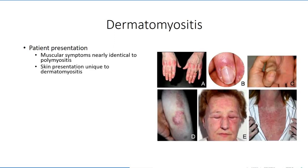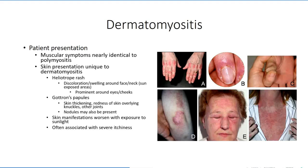What distinguishes the two diseases is the skin presentation that is unique to dermatomyositis. The pathogenesis of the cutaneous component is poorly understood, but is thought to be similar to that of muscle inflammation. The most common cutaneous issue involves a heliotrope rash, a term describing the purplish hue that the rash typically takes on. The rash is most prevalent in sun-exposed areas, suggesting that sunlight may aggravate the condition. The prominence of this rash around the eyes and cheeks is sometimes described as a raccoon mask because of its appearance.